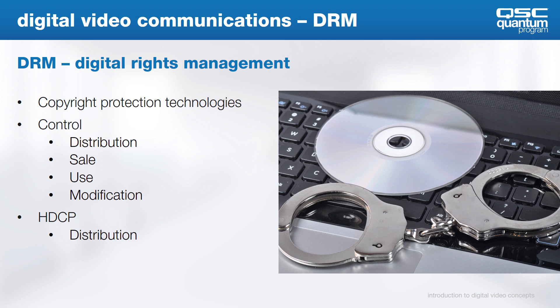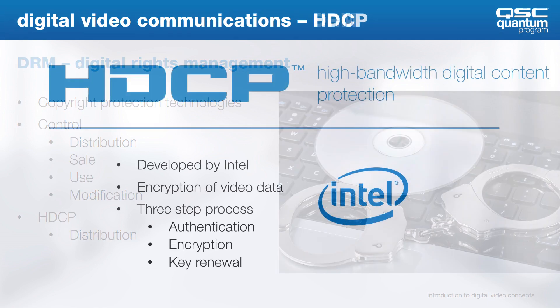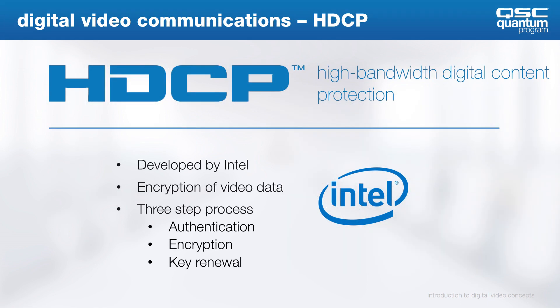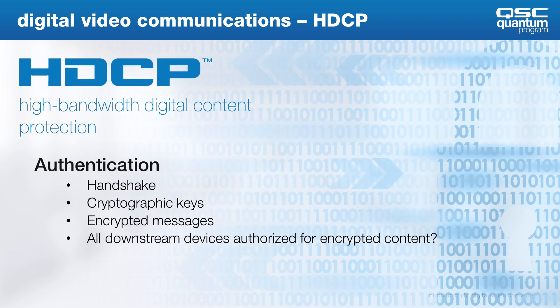For better or worse, HDCP is here to stay, so let's do our best to understand it. This video encryption process uses three steps: authentication, encryption, and key renewal. A source device initiates an authorization handshake protocol, using keys and encrypted messages to determine if a connected device is authorized and able to receive encrypted content.